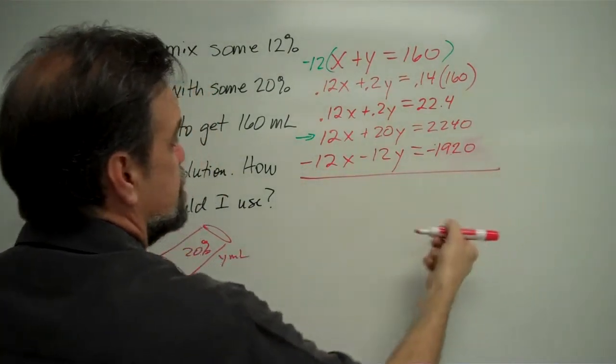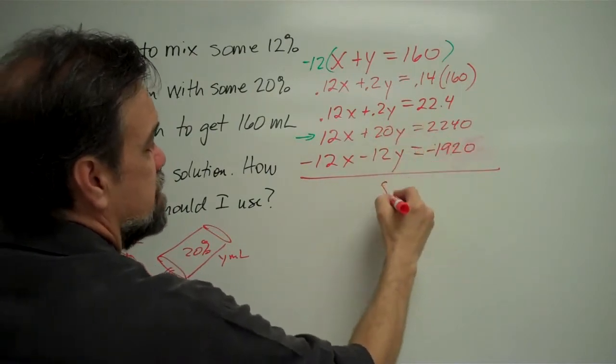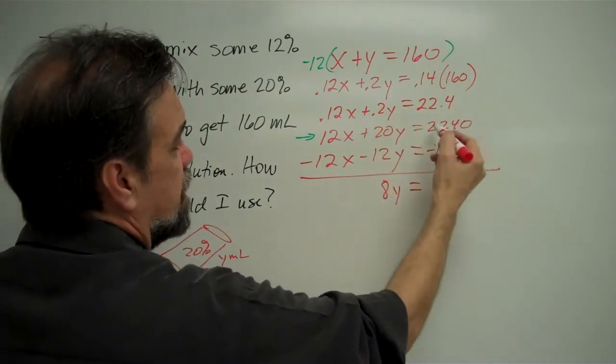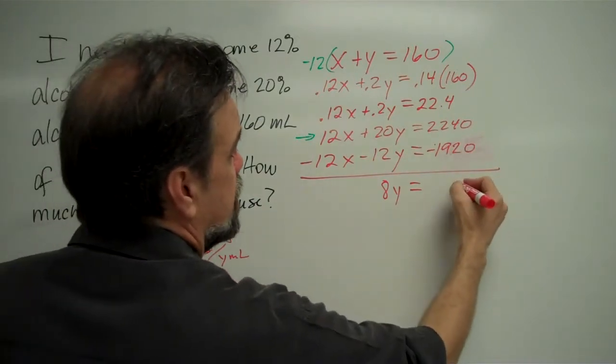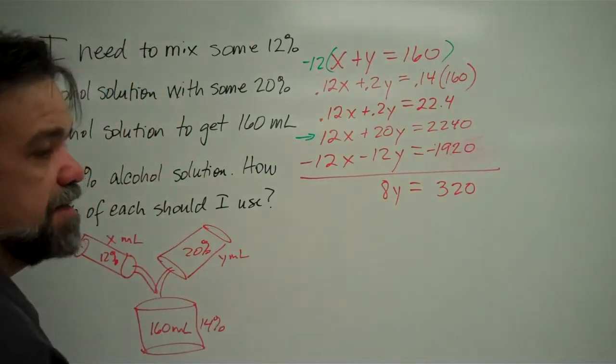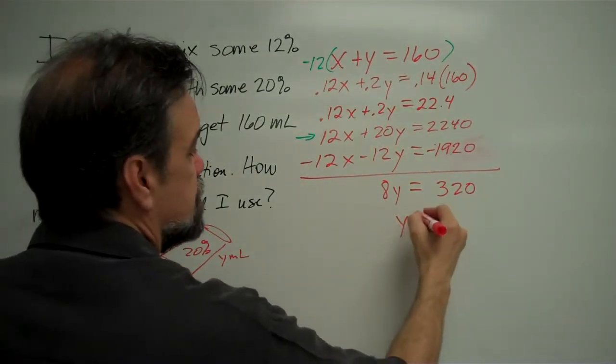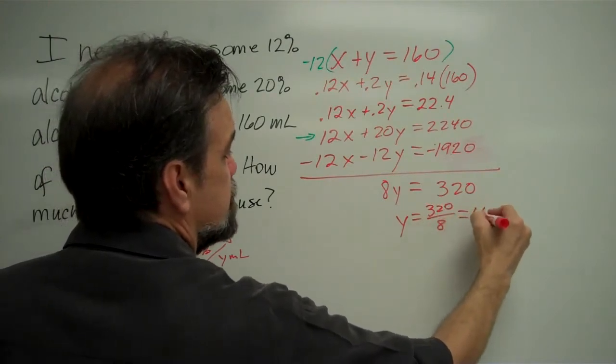Add this equation to this equation. 12x minus 12x is 0. 20y minus 12y is 8y. And 2,240 minus 1,920 is 2,320. So I get 8 times y equals 320. So y equals 320 divided by 8, which is 40.